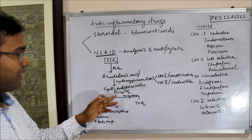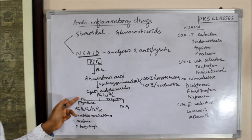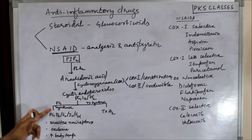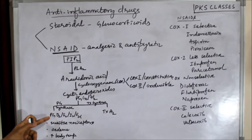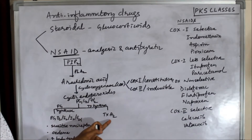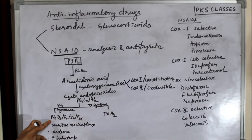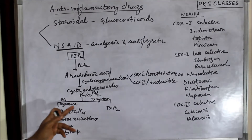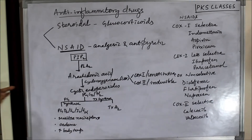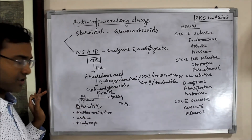Then there is action of two enzymes: prostaglandin synthase and thromboxane synthase. Prostaglandin synthase produces prostaglandins; thromboxane synthase produces thromboxane. So prostaglandins can be prostaglandin D2, E2, I2, and F2-alpha. These prostaglandins have many actions.